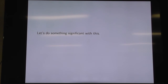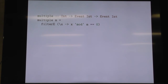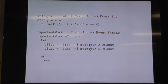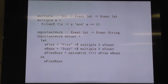Let's build an event network. We'll start with a little helper that filters events — this event of ints will be filtered based on whether it's a multiple. We have our input, which is a counter — an event of integers. Then we have an output that fires whenever that input is a multiple of three, and another event that fires when the input is a multiple of five. If they happen simultaneously, we combine the two of them.